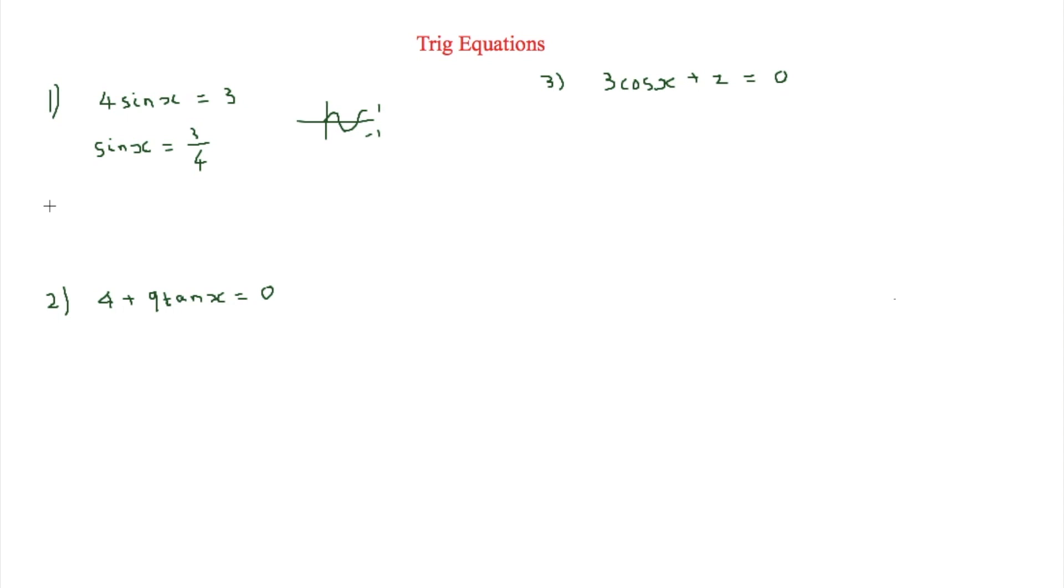Now in order to find x what we're going to do is sine to the minus 1 of 3 quarters. You can find sine to minus 1 by pressing shift sign on your calculator. And this is equal to 48.6 and that's in degrees.